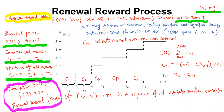Let's revisit the renewal process we discussed in the last lecture. A renewal process is an event count — the total number of events by time t, denoted nt. It looks like a staircase when plotted, with inter-arrival times t1, t2, t3, and so on up to tn.